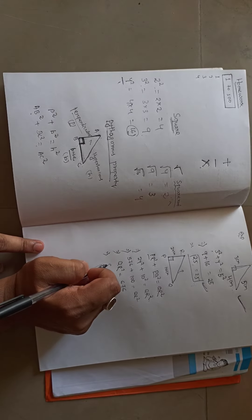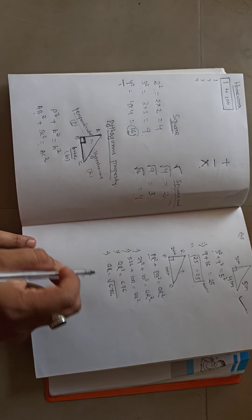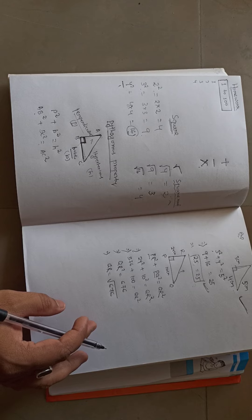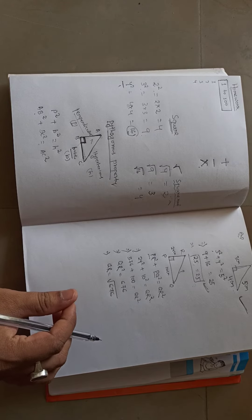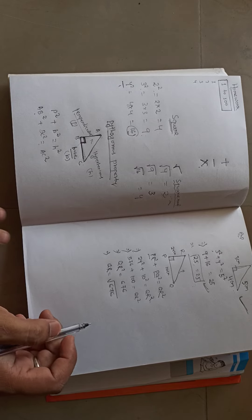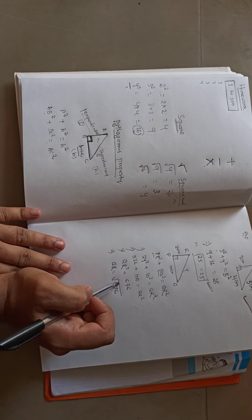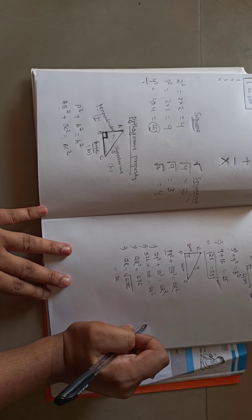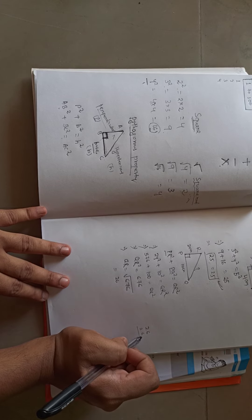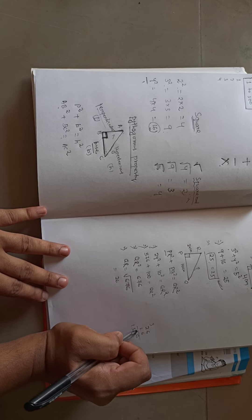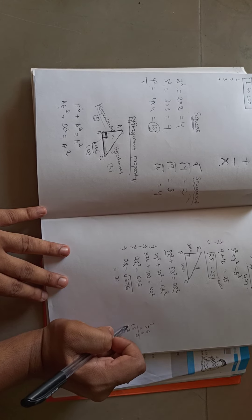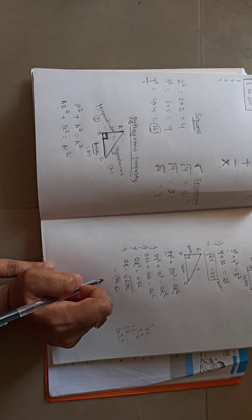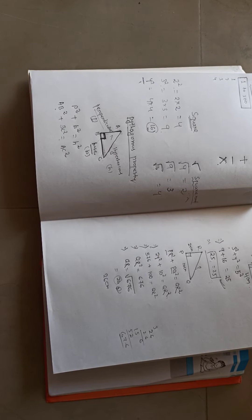The question asks to find QR, so QR = √676. We already discussed how to find square roots. The answer is 26, because 26 × 26 = 676. So QR = 26 centimeters.